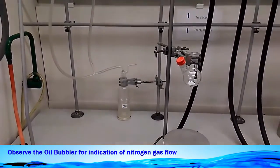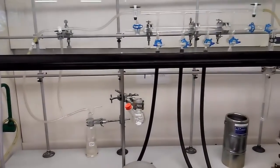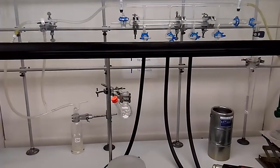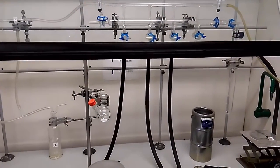So now we ensure that the whole Schlenk line is full of nitrogen. Okay, we stop the nitrogen for a while. We turn it off.